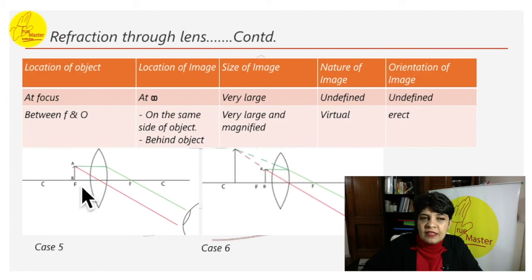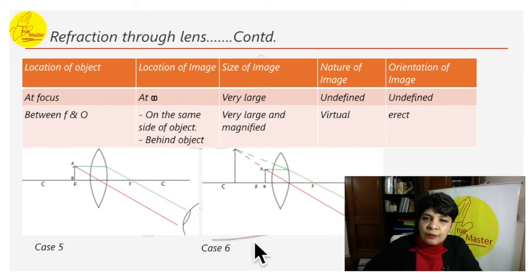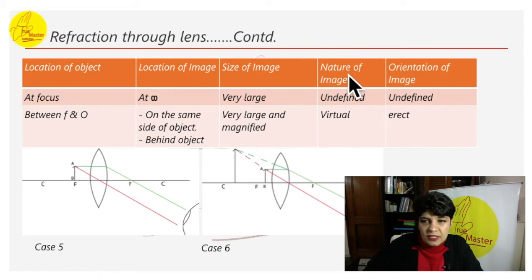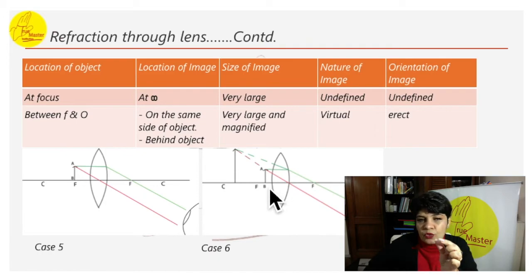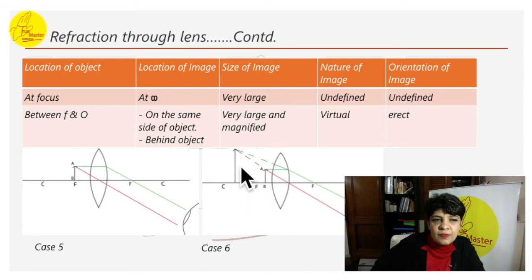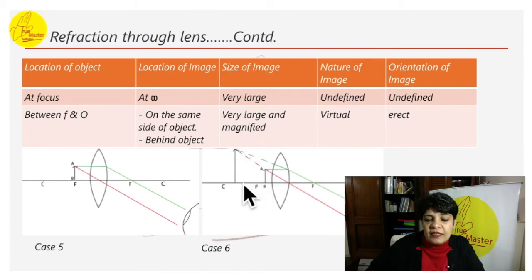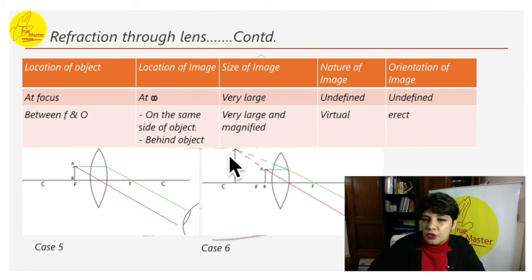Case 5: object is placed at the focus. The image is formed at infinity — the two rays never meet. Size, nature, and orientation are all undefined. Case 6: object is between f and the pole. The image is formed on the same side as the object. It is very large, magnified, virtual, and erect (not inverted).